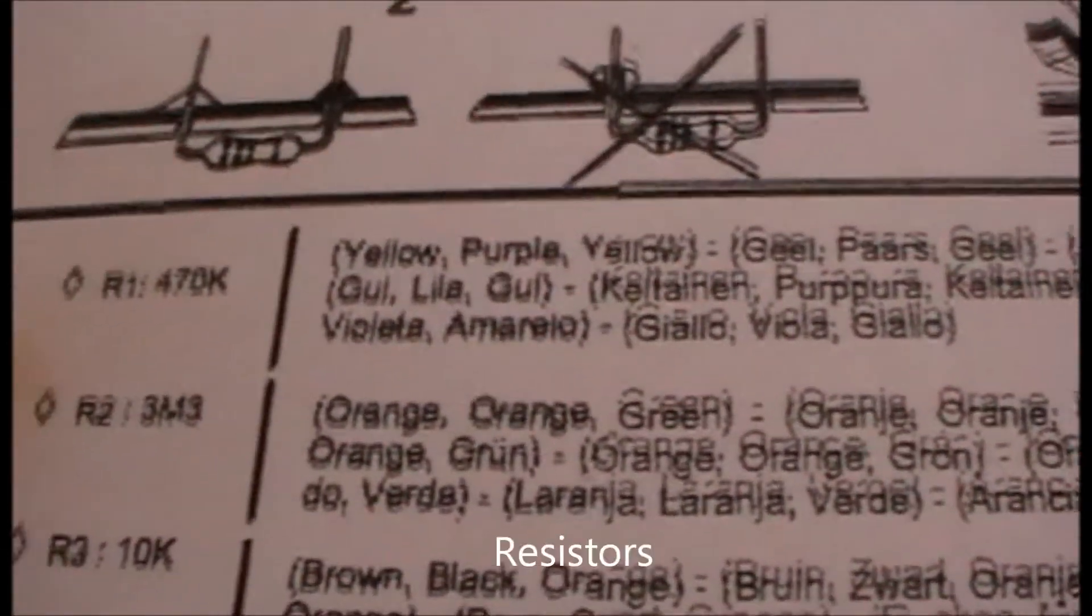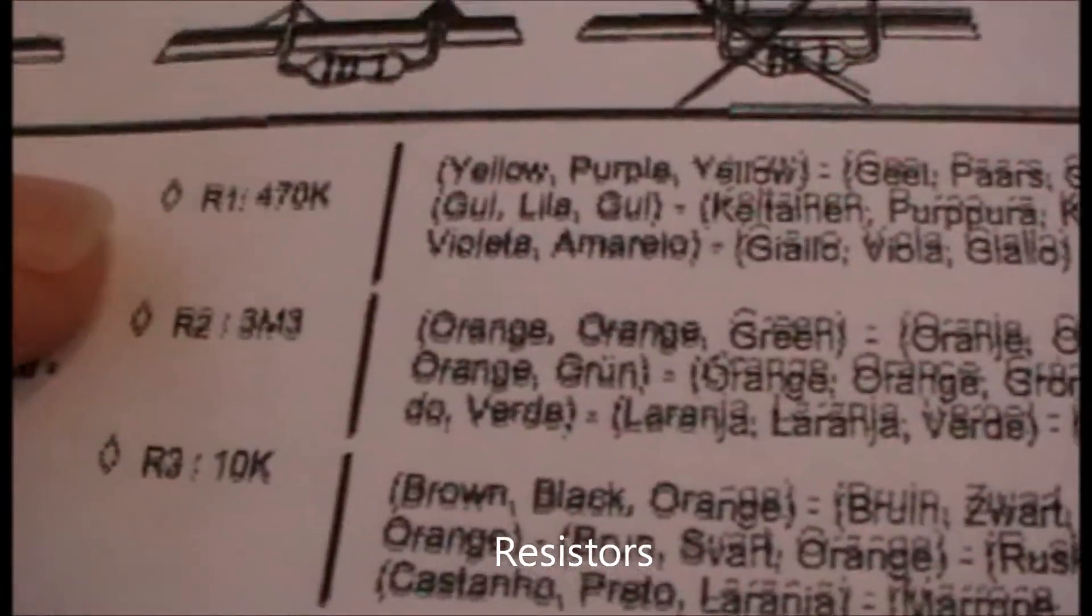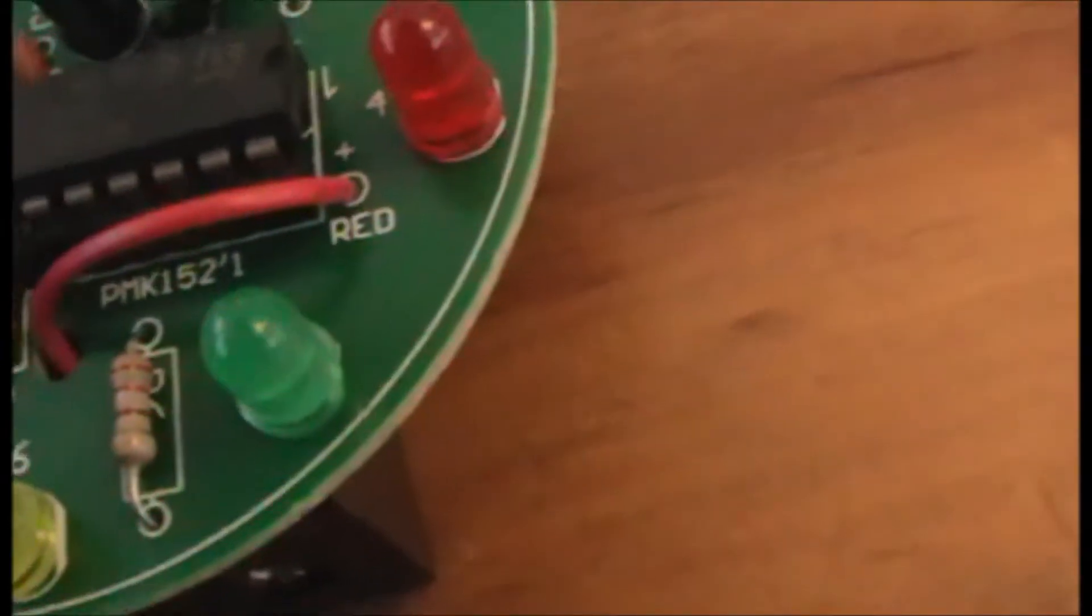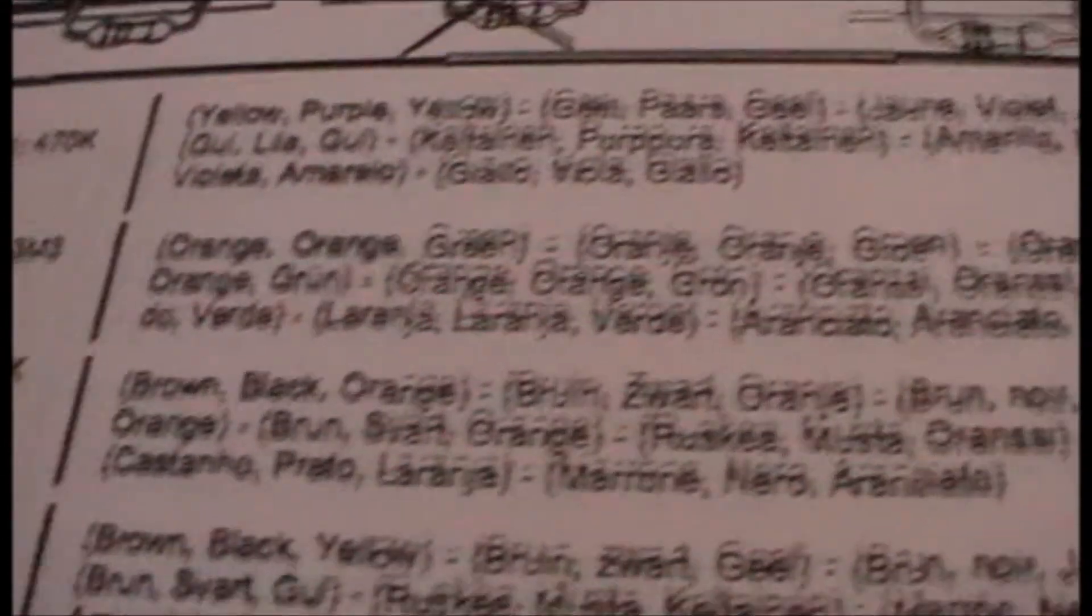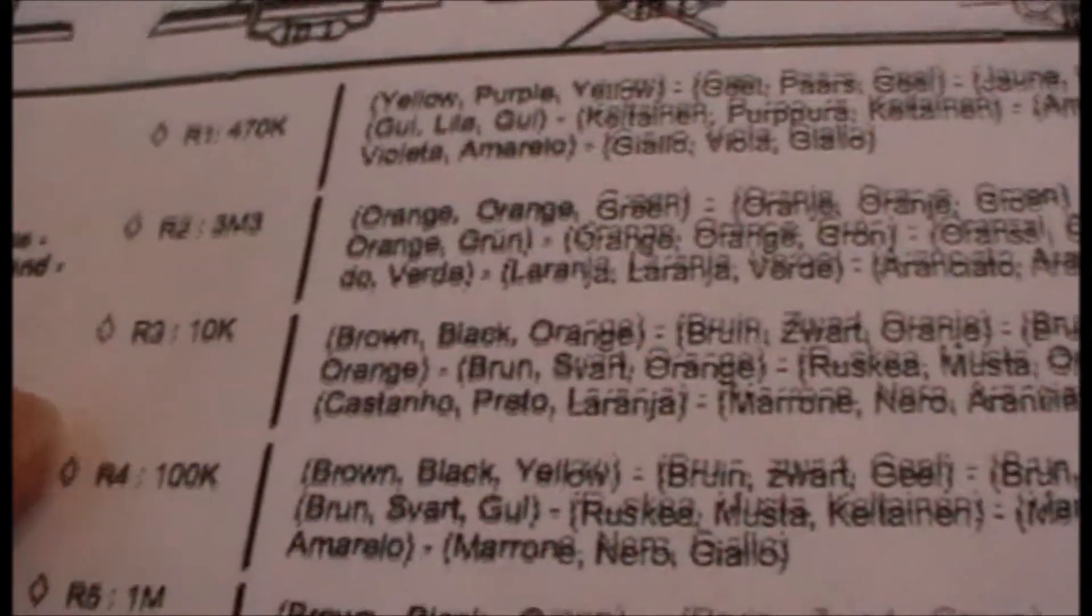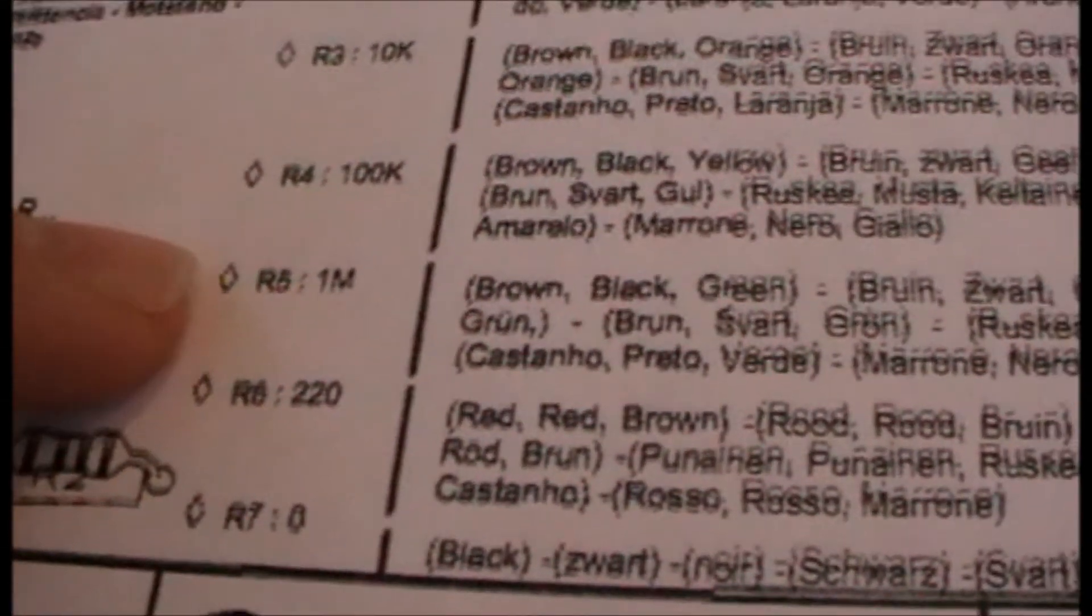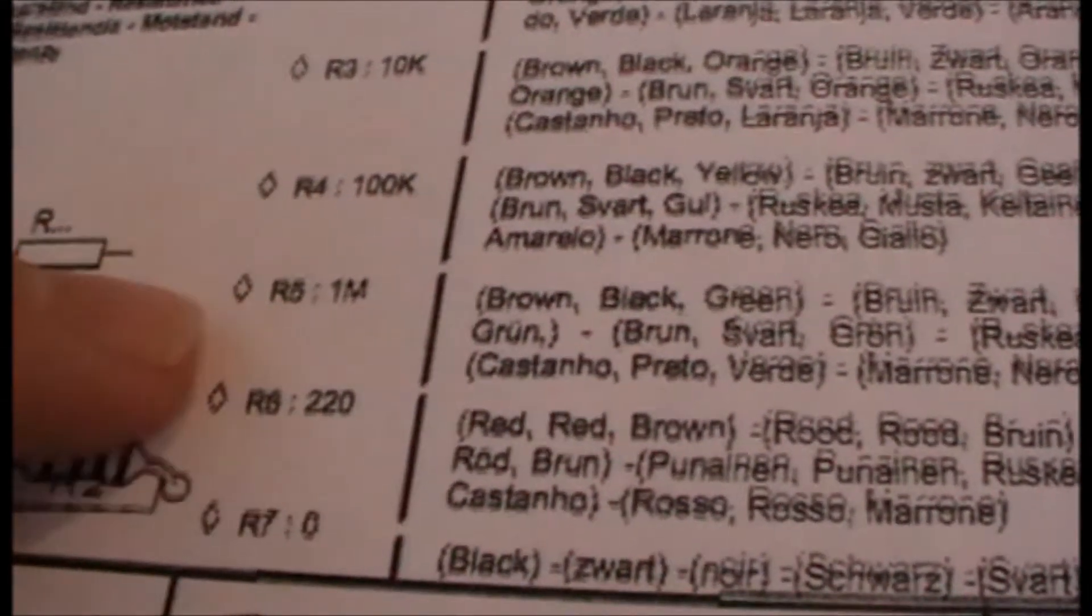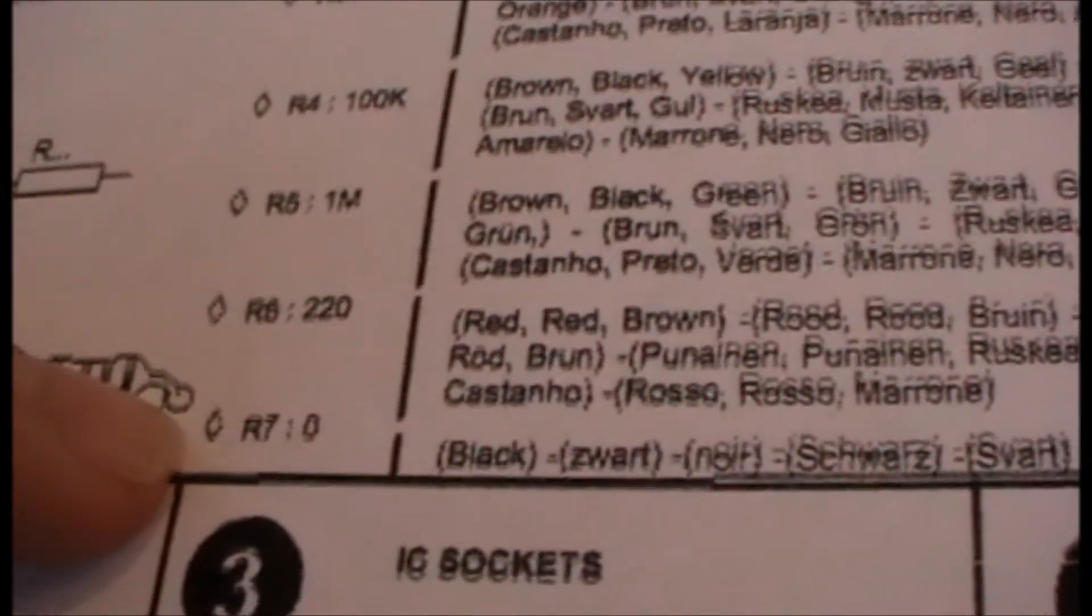First, you start with the resistors. The yellow-purple-yellow resistor goes in R1. The orange-orange-green resistor goes in R2. The brown-black-orange resistor goes in R3, R4, and R5. The red-red-brown resistor goes in R6, and the black resistor goes in R7.